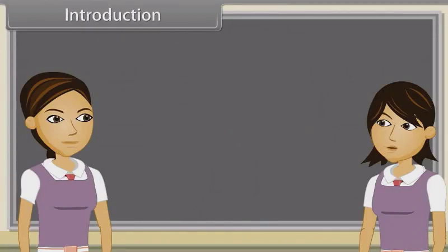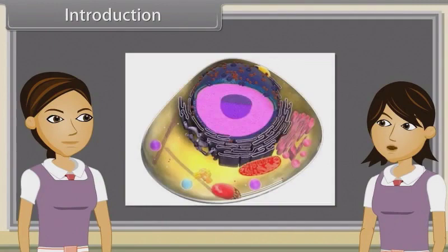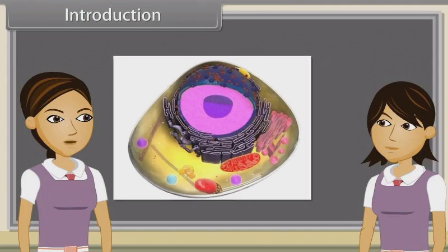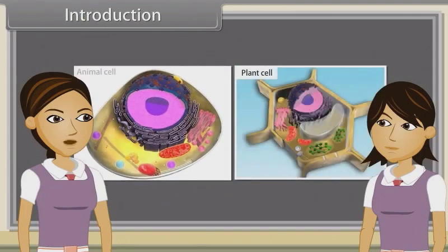Ankita, we have discussed cell theory, structure and functional regions of cell already. And now we'll discuss that there are two types of cells: plant cells and animal cells.